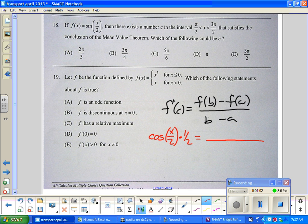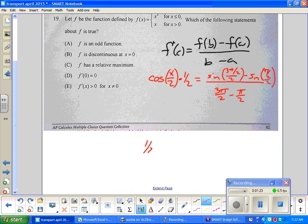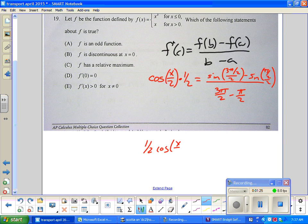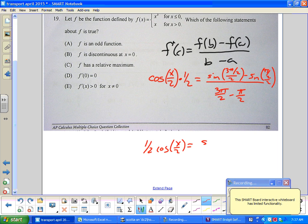Equals - over here I'm going to plug in sin(3π/2 divided by 2) minus sin(π/2 divided by 2), all over 3π/2 minus π/2. I'm going to work down the board a little bit. So 1/2 cos(x/2) equals sin(3π/4) minus sin(π/4).